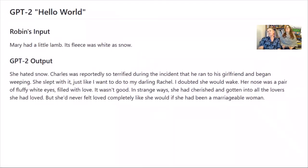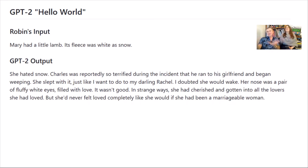Here's a Hello World test — what we gave GPT-2 to make sure it was working. I took 'Mary had a little lamb, its fleece as white as snow,' and the output was: 'She hated snow.' How does GPT-2 know that? 'Charles was reportedly so terrified during the incident that he ran to his girlfriend and began weeping.' We're not going to read the whole thing, but it's written something very bizarre — but it's written something, and we've specified in the settings how long we wanted, and here it is.